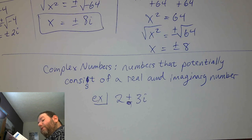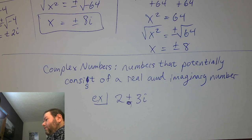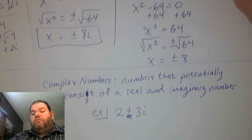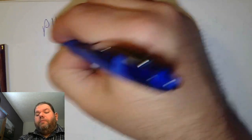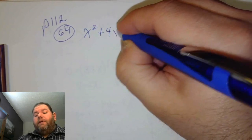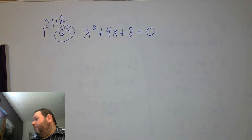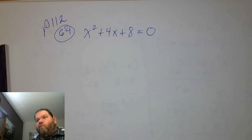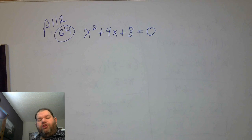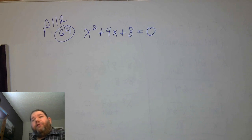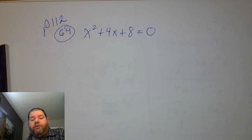Let's go ahead and look at number 64 on page 112. We're given x squared plus 4x plus 8 equals 0. If it's not factorable, we'll go ahead and use the quadratic formula. Our processes don't really change from the previous section — what's changing is the type of answers we're going to end up with. Whereas before we ended up with real results, now we're potentially going to get imaginary and complex results.